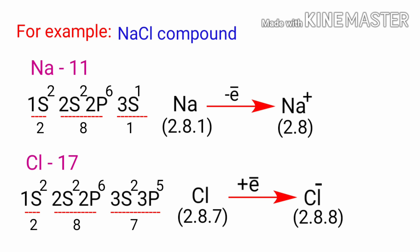In this example, sodium will donate its one electron to empty its shell and chlorine will accept that electron to fill its shell. Both ions now satisfy the octet rule and have complete outermost shells.